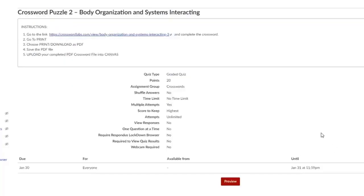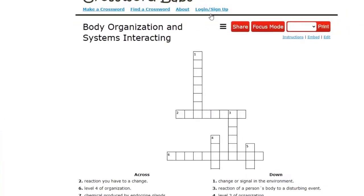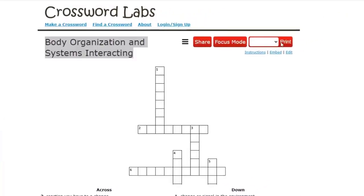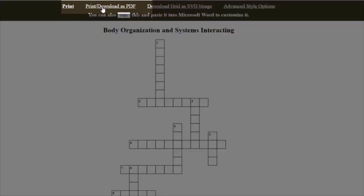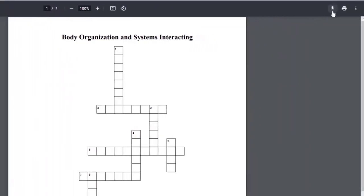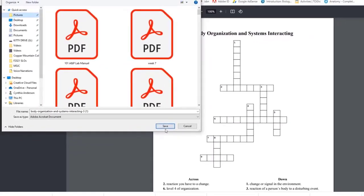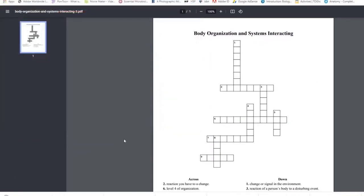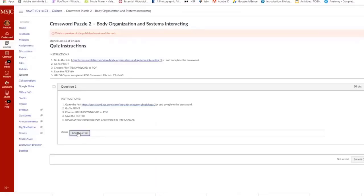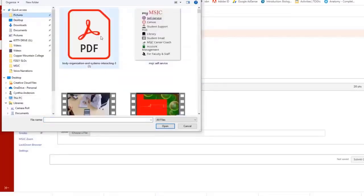And a crossword puzzle. For these crossword puzzles, you will go to the link provided, complete the crossword, go to Print, choose Print or Download as PDF, and save the PDF file to your computer. Then upload your completed PDF crossword file into Canvas.